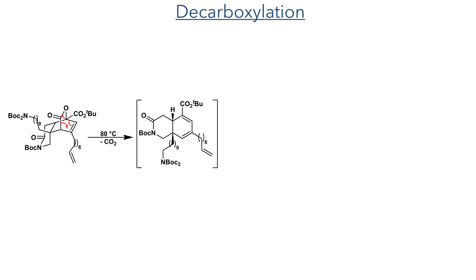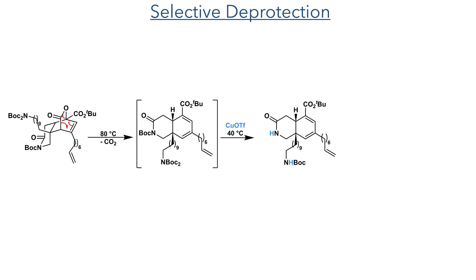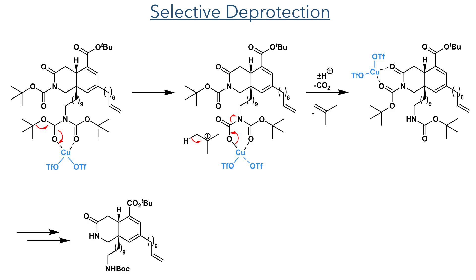In the next step, the researchers heated the compound to 80 degrees to carry out a thermal decarboxylation. This is a cycloreversion reaction where a ring is broken with the extrusion of carbon dioxide and the formation of a diene system. They could then selectively deprotect two of the three Boc groups using copper triflate at 40 degrees in the same pot as the decarboxylation reaction. This selectivity arises from the necessity for a 1,3-dicarbonyl system to chelate the copper cation, which activates the carbonyl, promoting elimination of the tert-butyl cation and allowing the copper-coordinated carbonate to undergo decarboxylation, forming the mono-Boc protected amine. As this mono-Boc protected group cannot chelate the copper, it does not undergo further deprotection. This process repeats on the Boc-protected amide present in the azadecalin ring system.